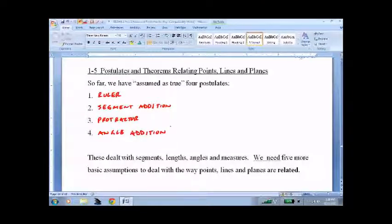And if you want to look at it this way, Ruler said that we can put points on a line. And Segment Addition says we can add and subtract those points so that we bring all the properties of algebra into play. Same thing for the protractor, except instead of talking about segments, we're talking about angles.